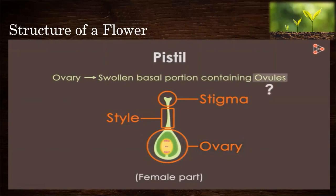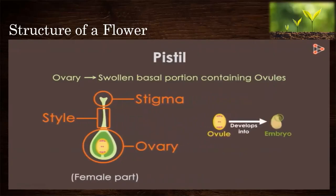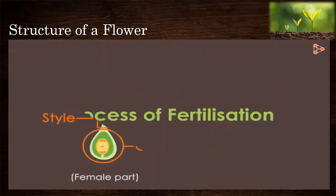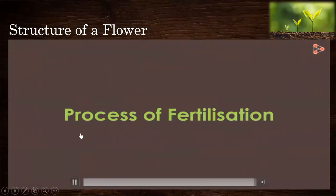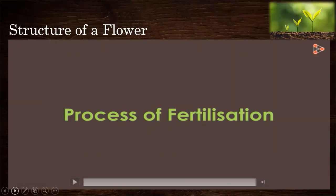Ovules are the female gametes that get fertilized and form the embryo. This process is quite complicated — this was just an overview. We will get into more details of fertilization in the next video. So you have just watched the structure of a flower, how it looks, and some of its functions. Moving on.